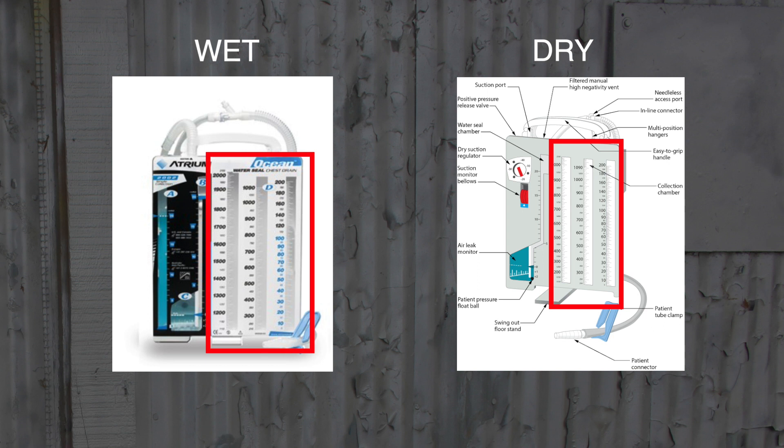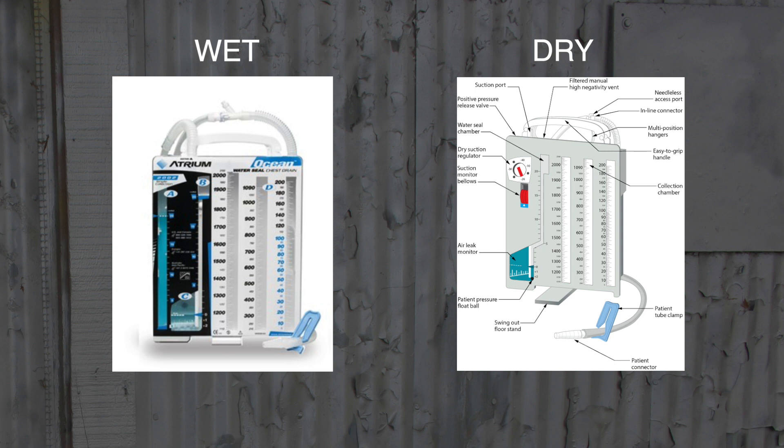Drainage must be monitored hourly for the first 24 hours after chest tube placement, then per hospital protocol guidelines. However, at any time, if you have bright red blood or drainage of 100 mLs per hour, you must notify the covering provider.